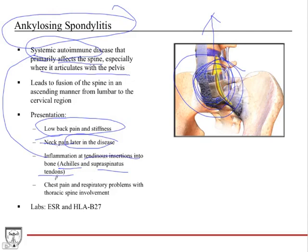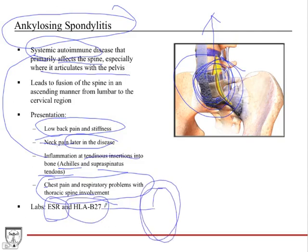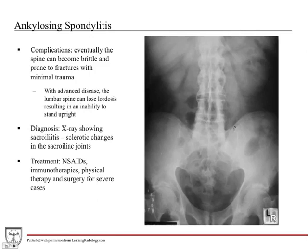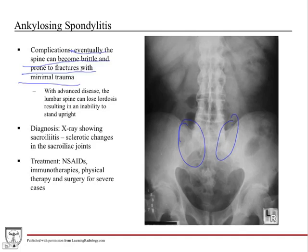If the disease is really bad, patients can have chest pain and respiratory problems because the ribs directly articulate with the thoracic spine. Labs will show elevated ESR because it's a systemic inflammatory disorder. HLA-B27 is a big Step 1 marker — if you see this on Step 1, it often means ankylosing spondylitis. Eventually the spine becomes brittle due to ascending stiffness and can be prone to fractures with minimal trauma. Even a minor fall can break a vertebral body in severe disease.